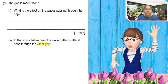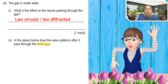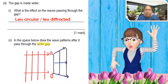Part D: the gap is made wider. What is the effect on the wave pattern? When the gap is made wider, diffraction becomes less - less circular, less diffracted. Draw the wave pattern after passing through the wider gap. Make the gap bigger than the wavelength. The opening becomes wider, and you can see there is less circular - it already becomes a straight line. Draw the arrows showing spread out.